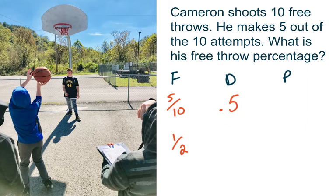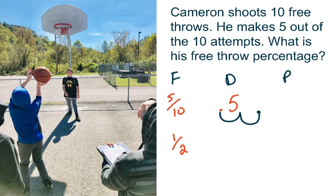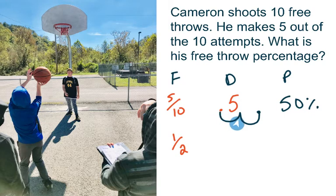When you're given a fraction and you want to make it a percent, you have to make it a decimal first. We do that because percent means out of 100. So we take this decimal and move it two times to the right — that puts it in the hundredths place. You just add a placeholder 0, so you write this as 50%. So 5 tenths is the same thing as 0.5, which is the same thing as 50 percent. To make a decimal a percent, move the decimal two places to the right.